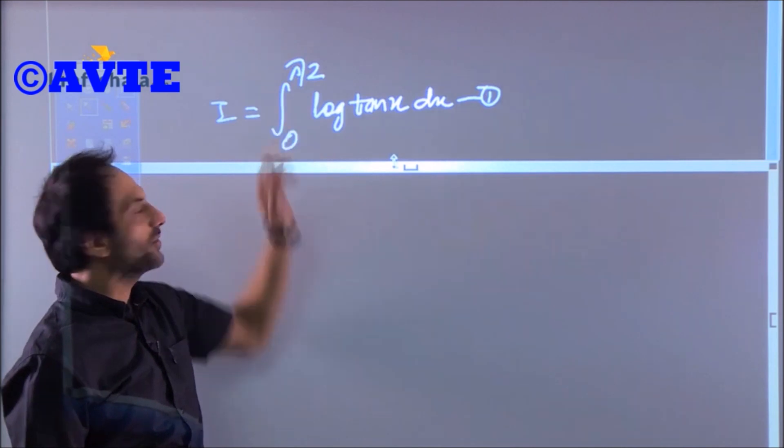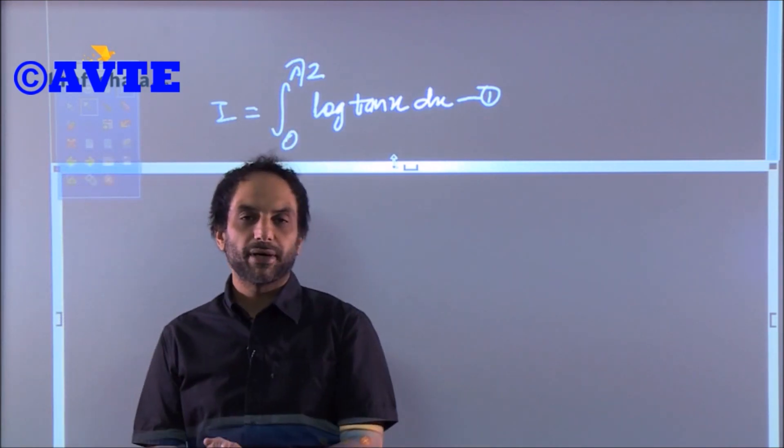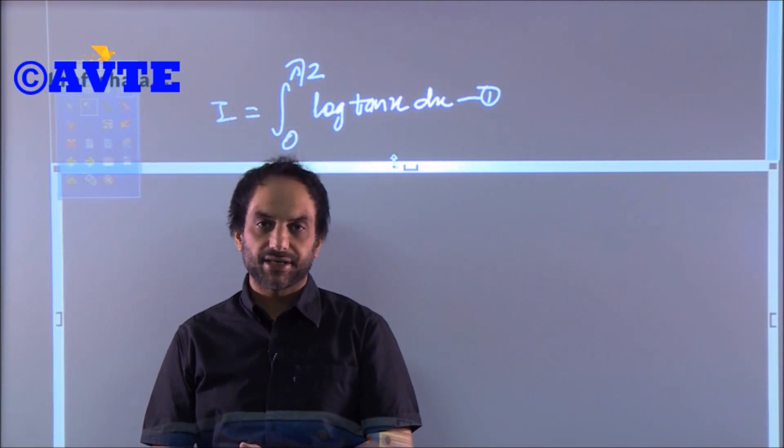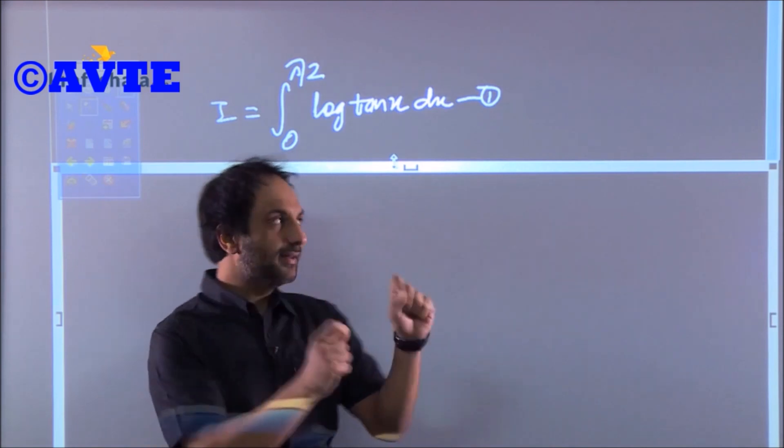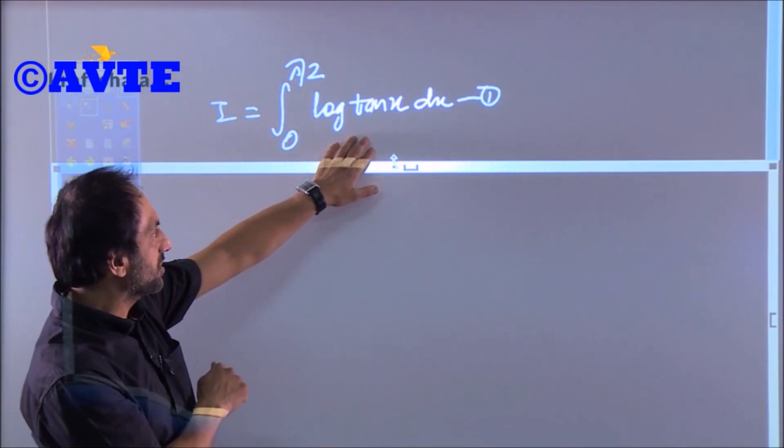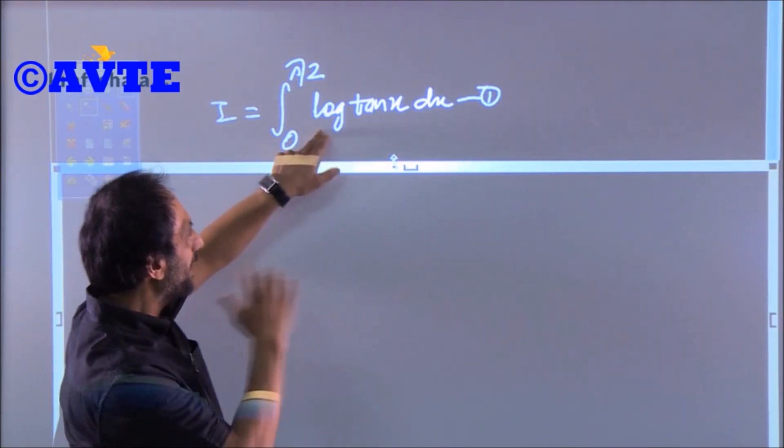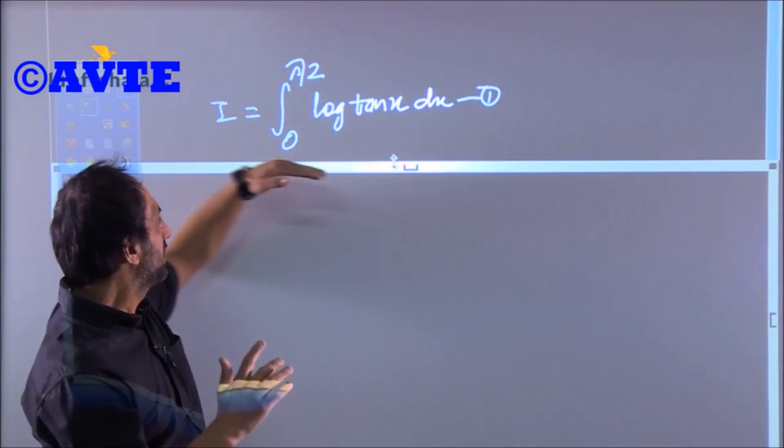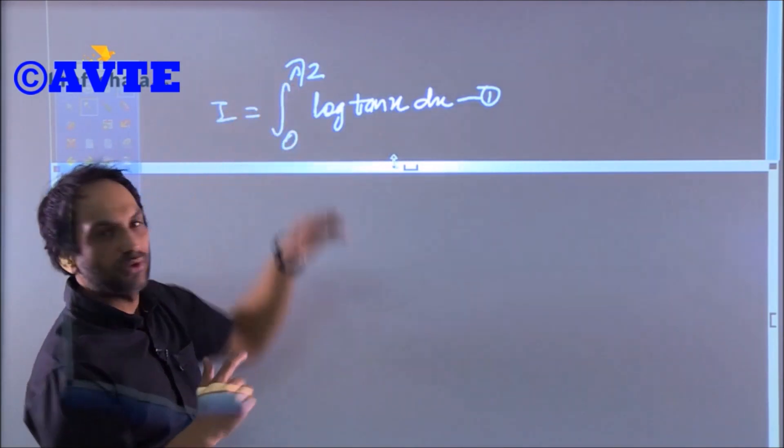This is another question: ∫₀^(π/2) log tan x dx. If you focus only on indefinite integration, then one could apply by parts and it's of no use at all. Instead, apply the property ∫₀ᵃ f(x)dx = ∫₀ᵃ f(a-x)dx.